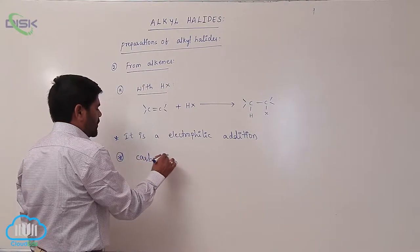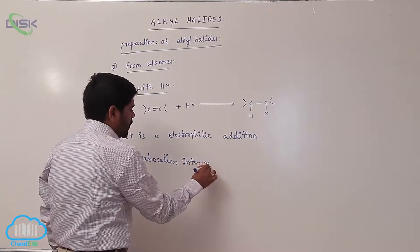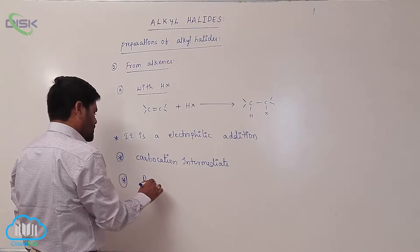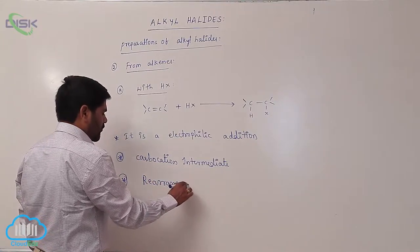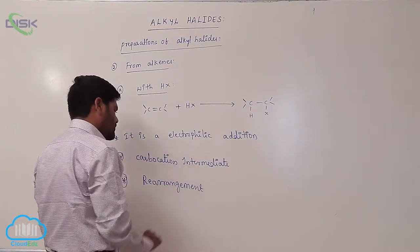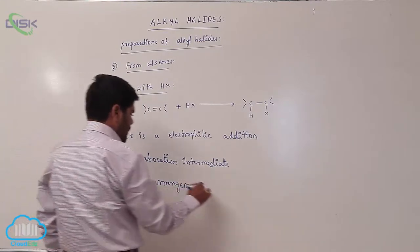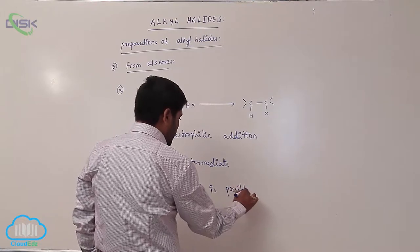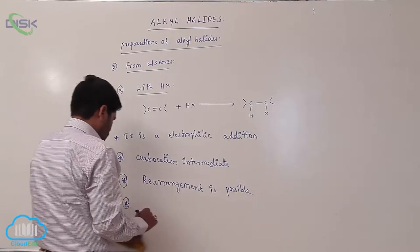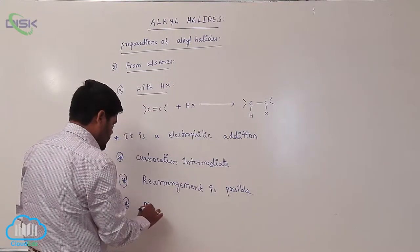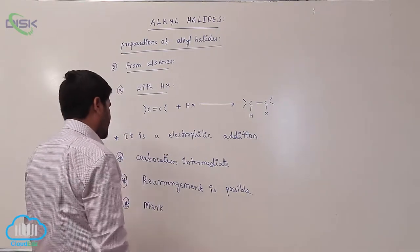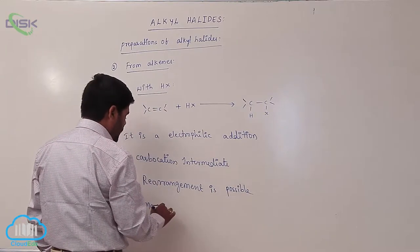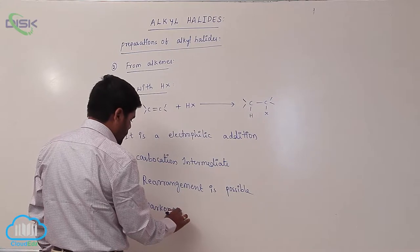A carbocation intermediate is formed, and due to the formation of this carbocation, rearrangement is possible. Also, when a more substituted alkene reacts with hydrogen halide, Markovnikov's rule is followed.